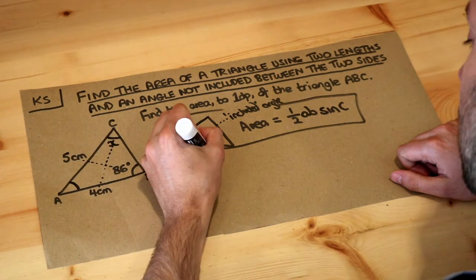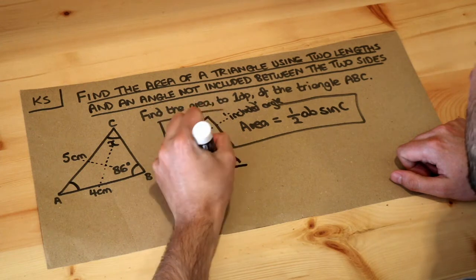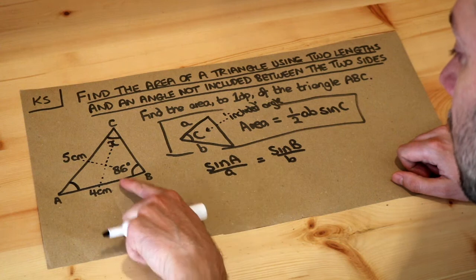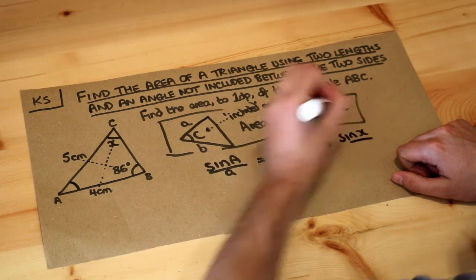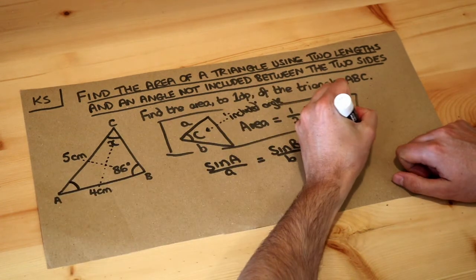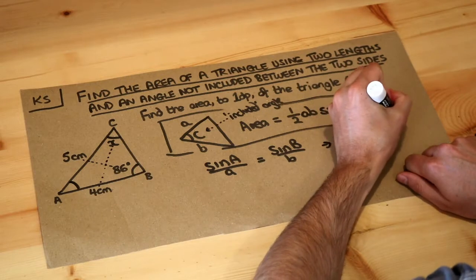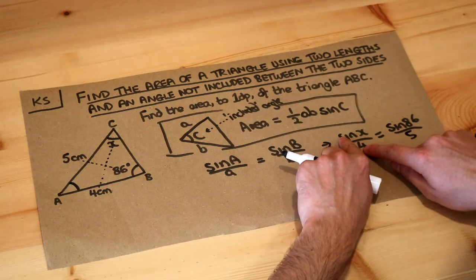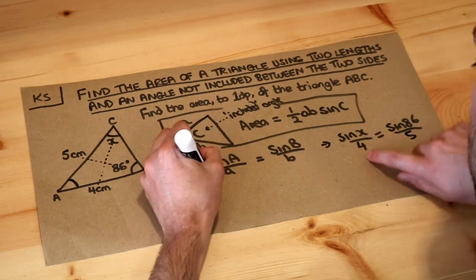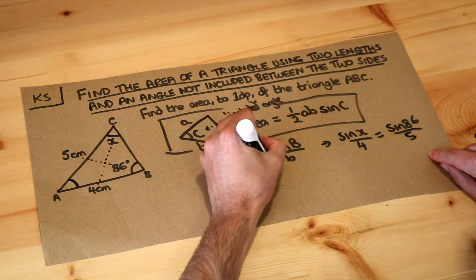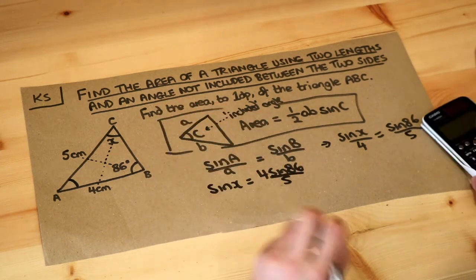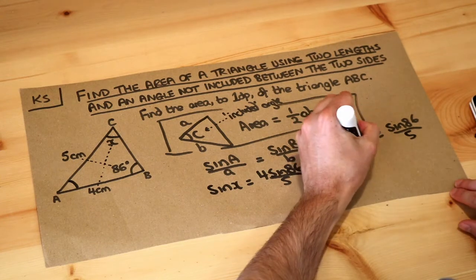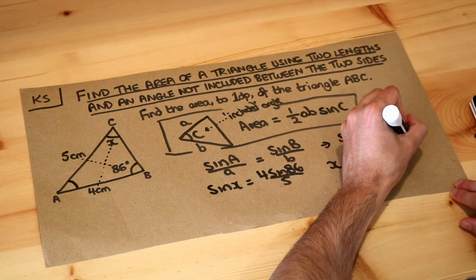The sine rule for finding unknown angles: sine A over a is equal to sine B over b. So let's use what we've got here: the sine of X over the length of the opposite side, which is 4, is equal to sine of 86 over the length of the opposite side, which is 5. We want to get X on its own, so we multiply both sides by 4. So sine of X is equal to 4 sine 86 over 5, and then we do inverse sine of both sides to get X. So X is equal to inverse sine of 4 sine 86 over 5.